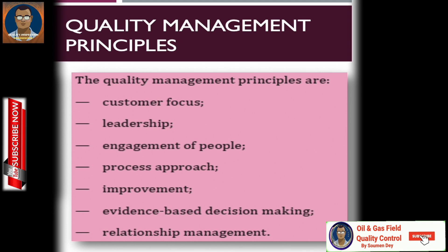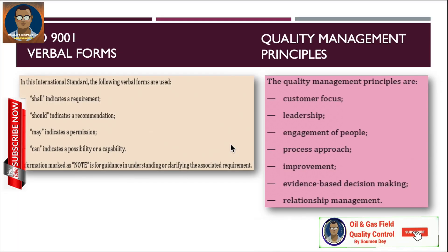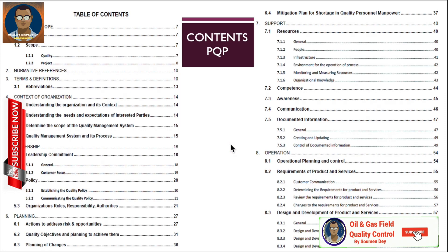These are the main seven quality management principles found in ISO 9001. When a quality management system is being developed for an organization, there is a requirement to prepare a PQP — a project quality plan. A project quality plan is basically based on the ISO 9001 clauses, and it fulfills all the requirements of the ten clauses of ISO 9001.